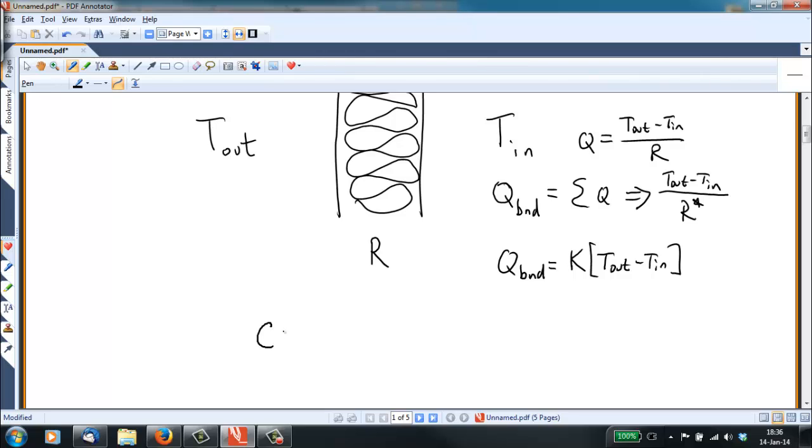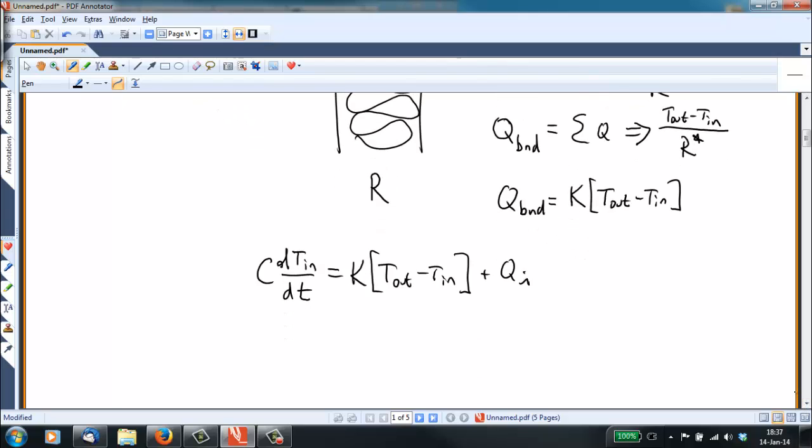By substitution then we can write C dT_in/dt is equal to, substituting for Q_BND now, we have K times T_out minus T_in plus Q_i. We can rewrite this a little bit here, and we'll write C times the derivative of the indoor temperature with respect to time. We'll take the T_in over here to the left hand side, so we get plus K T_in equals K times the outside temperature plus Q_i.